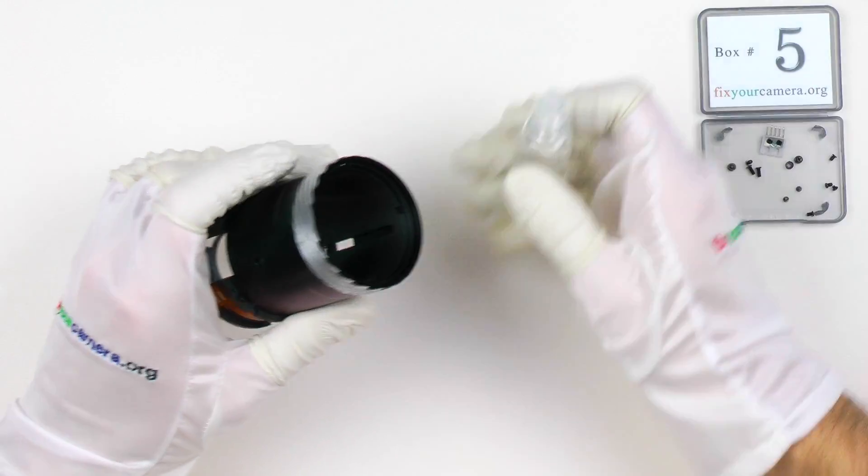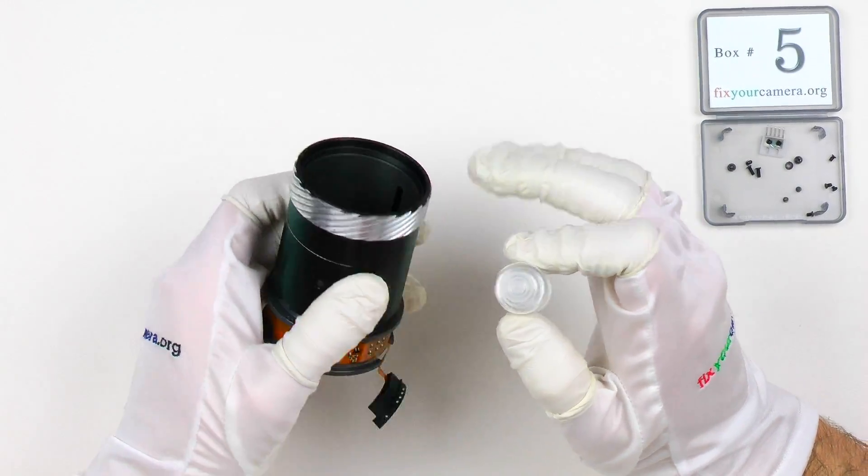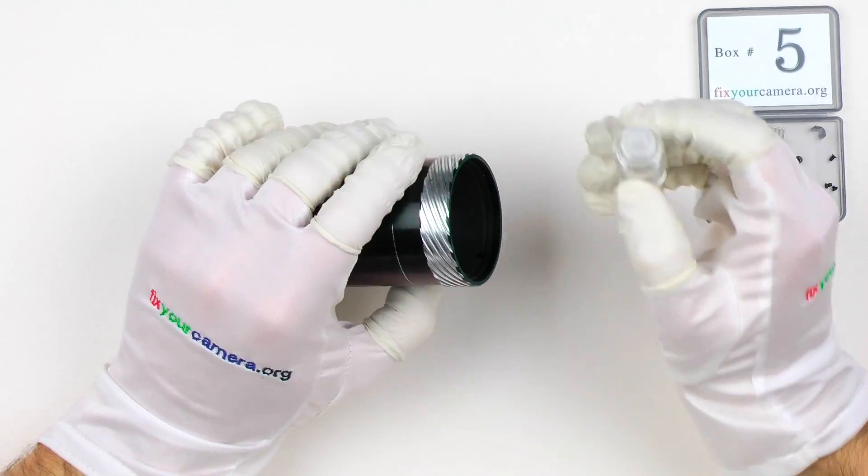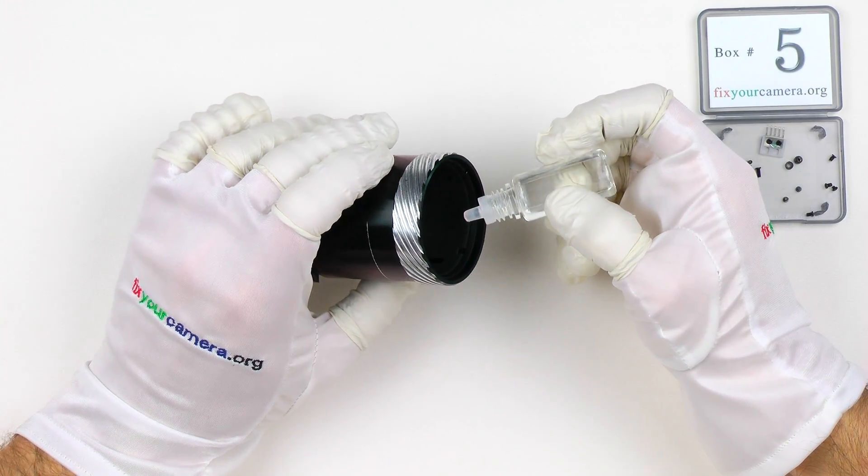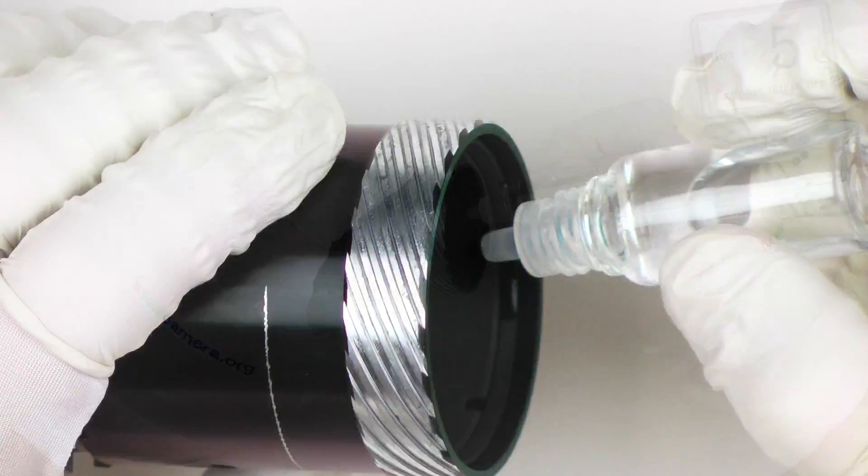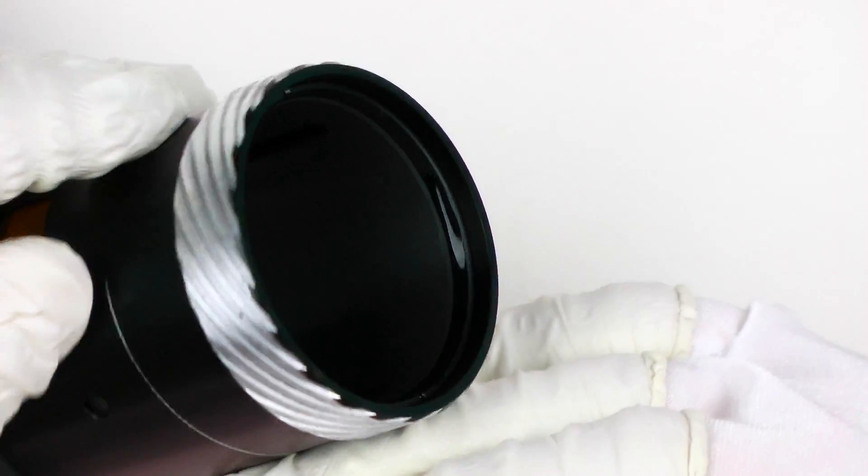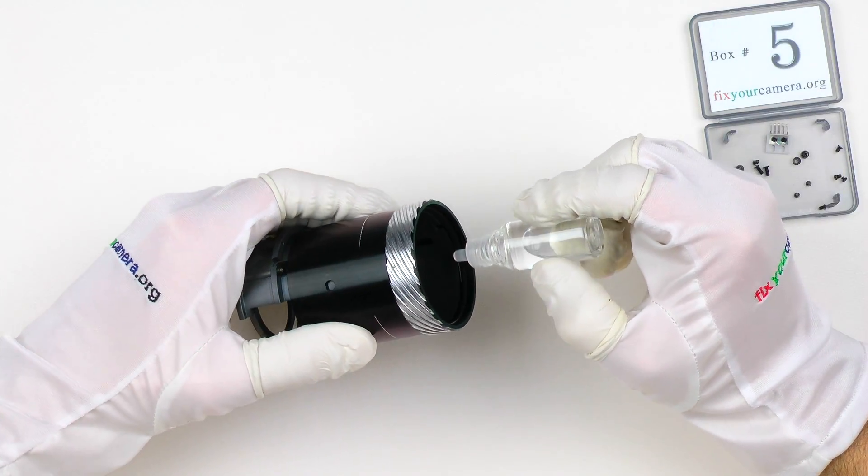But cameras and lenses have to be serviced from time to time. And this means that they have to be disassembled. And that's why manufacturers are using this 3-bond screw lock instead of a super glue, for example. Because it can be dissolved easily by using alcohol. Which again, unlike acetone, is safe for plastics and paint.